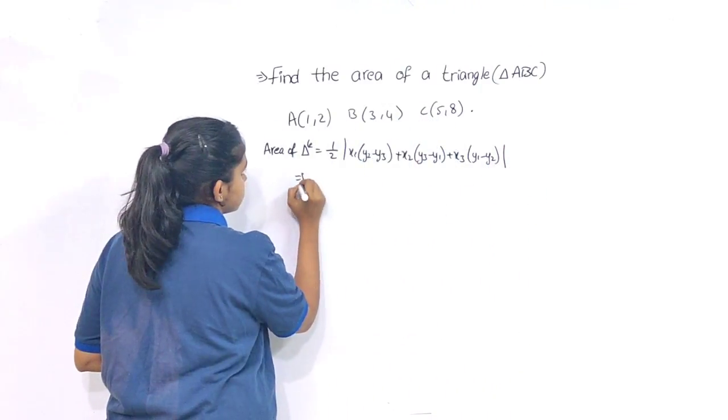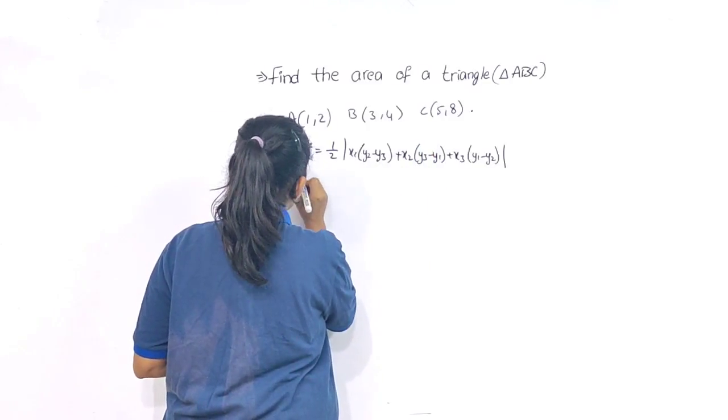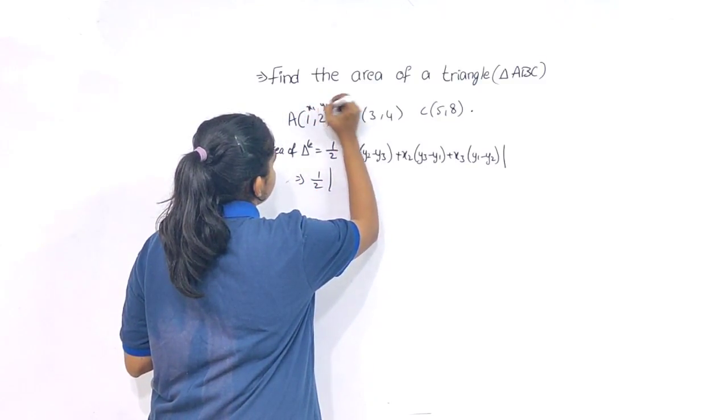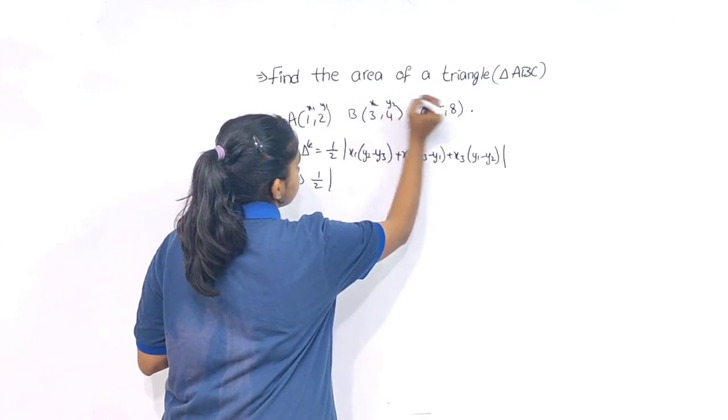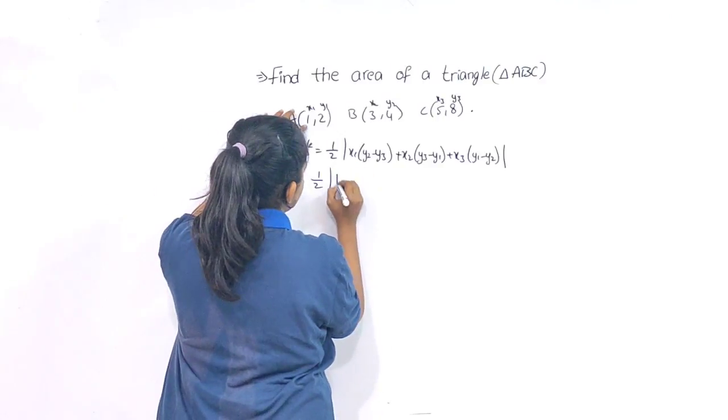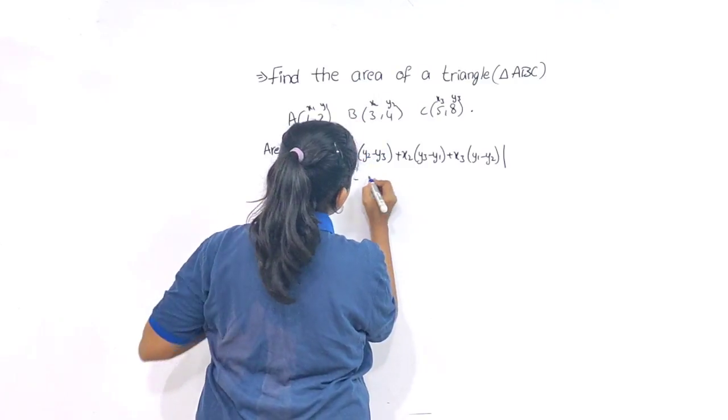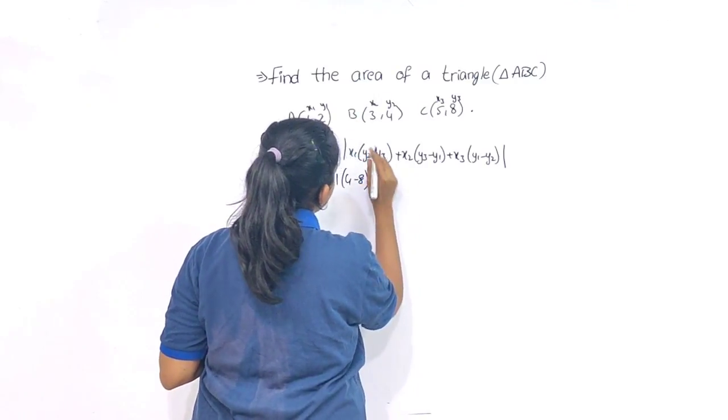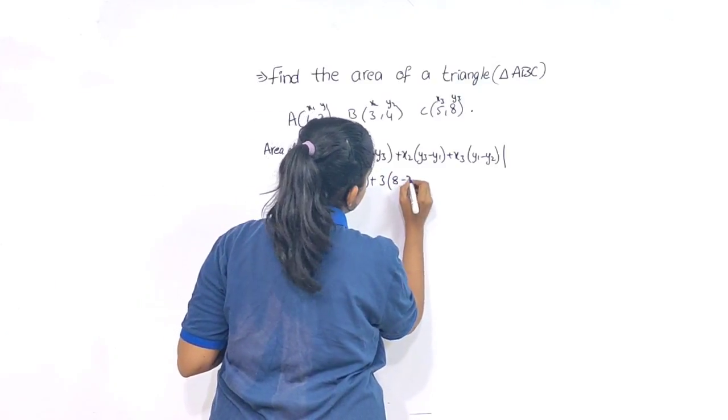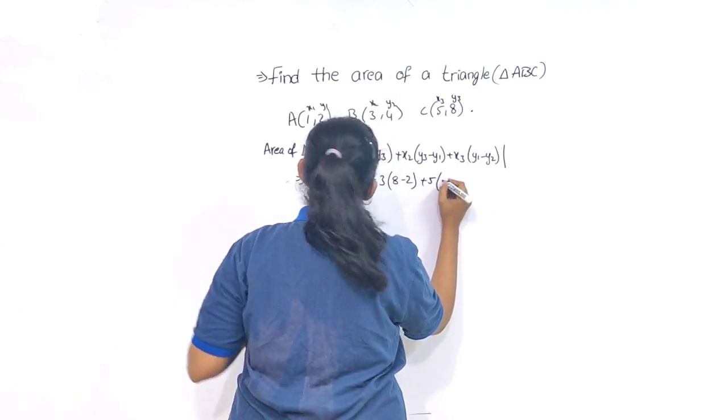Now I am going to substitute the numbers in the formula. x1 is 1, y2 is 4 minus 8, plus x2 is 3, y3 is 8 minus 2, plus x3 is 5, y1 is 2 minus 4, modulus.